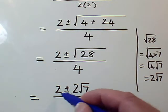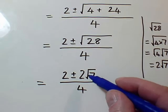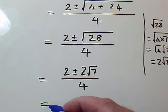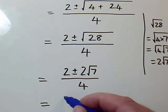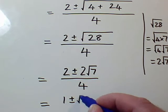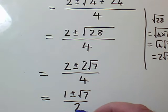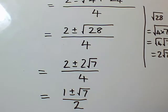And then, because I've got multiples of 2 on the top and the bottom, I can divide top and bottom of a fraction by the same thing. So I can divide top and bottom by 2. So I can get 1 plus or minus the square root of 7, 1 times the square root of 7, all over 2. And that's in a simplified form.